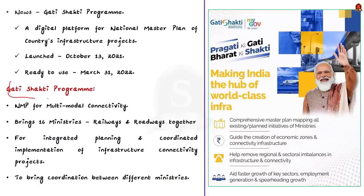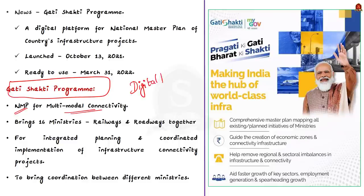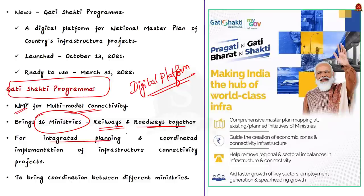What is the Gati Shakti program? The Pradhan Mantri Gati Shakti is a national master plan for multimodal connectivity. It is a digital platform that will bring 16 ministries including railways and roadways together for the purpose of integrated planning and coordinated implementation of infrastructure connectivity projects. That is why it is called the national master plan for multimodal connectivity.